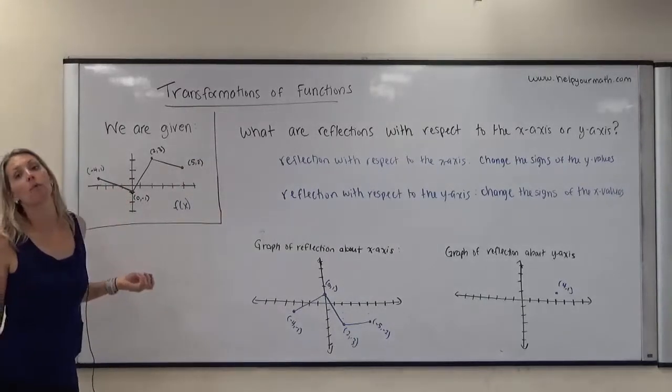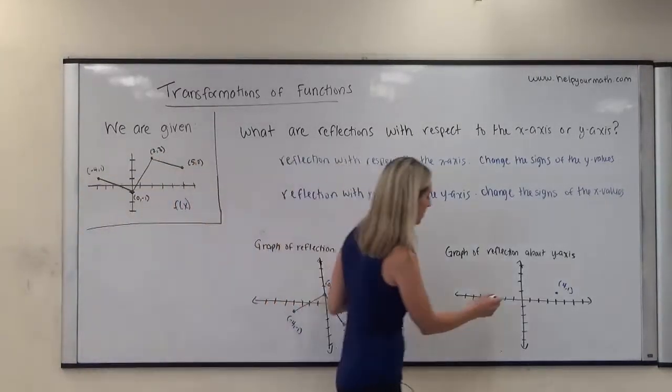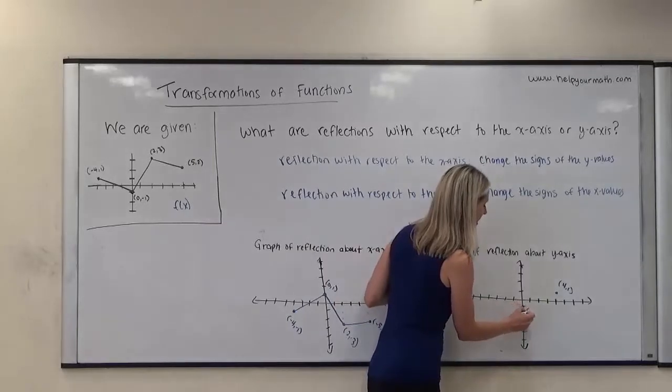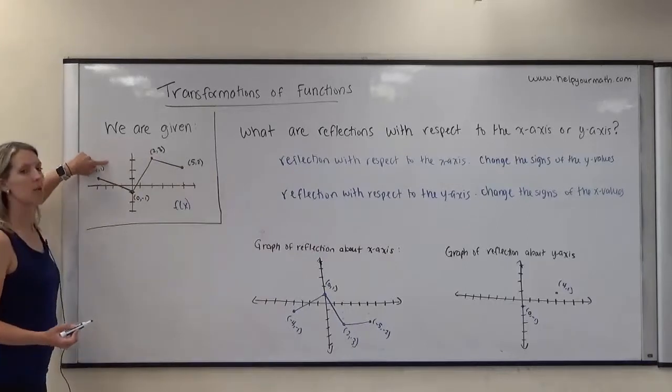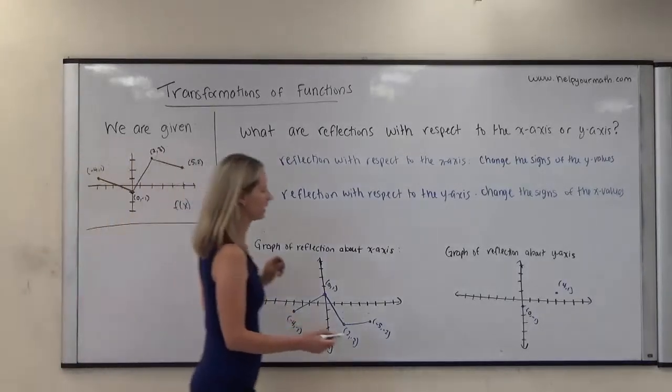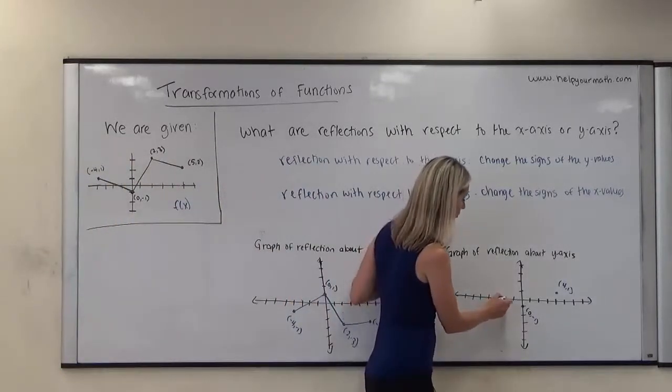0, negative 1, actually, it's not going to move because it's lying on top of the y-axis. So it would just stay there at 0, negative 1. Then 2, 3 will end up over here, so it would become negative 2, 3. It's going to affect the x-coordinates. Negative 2, up 1.